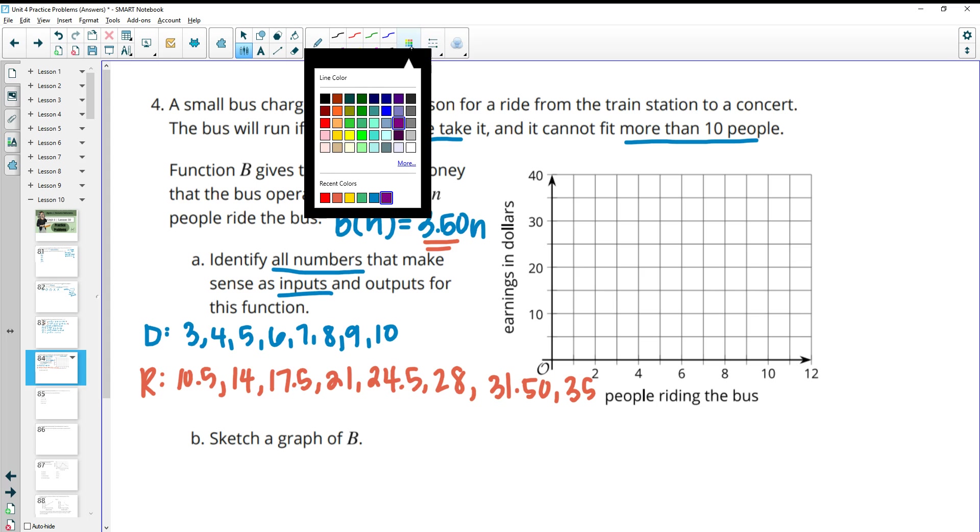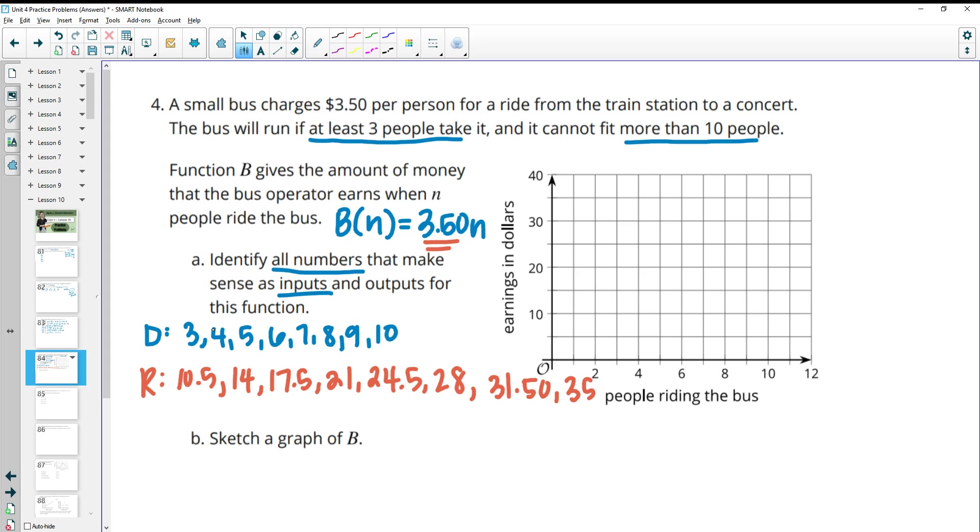Now you want to plot these. And when we plot these, we are not going to have a line because we're not going to do partials. We're just going to have each of these ordered pairs. So like (3, 10.50) will be on there. (4, 14), which again is 4 times 3.50, and then (5, 17.50), and so on. So you're just going to plot those points. So at 3, we're at about 10.50. 4, we're at 14. At 5, we're at 17.50. At 6, we're at 21. 7, we're at 24.50. 8, we're at 28. 9, we're at 31.50. And then 10, we're at 35. And then do not connect. So no line because otherwise that's saying we can have partial people riding, which we can't.